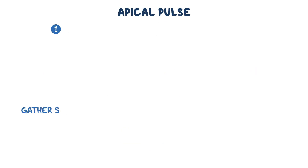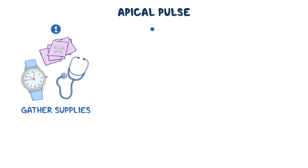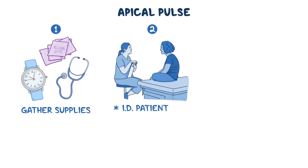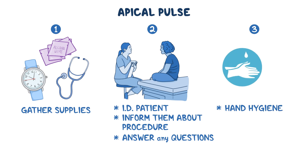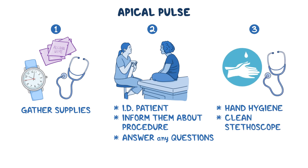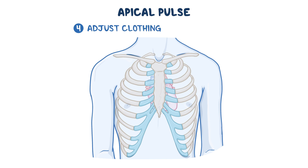To obtain an apical pulse, gather the supplies you'll need including a watch, alcohol wipes, and a stethoscope. Identify your patient, inform them about the procedure, answer any questions, practice hand hygiene, and use an alcohol wipe to clean your stethoscope.